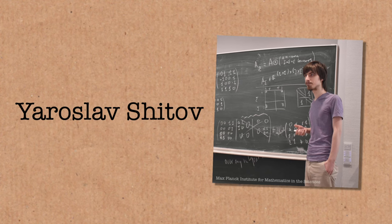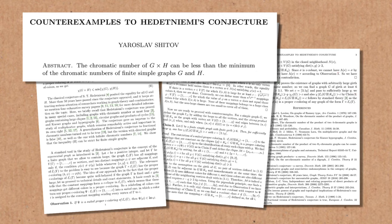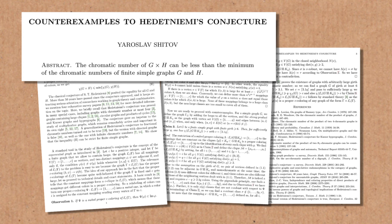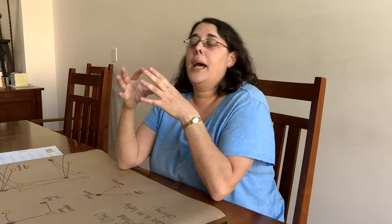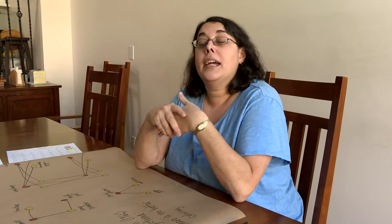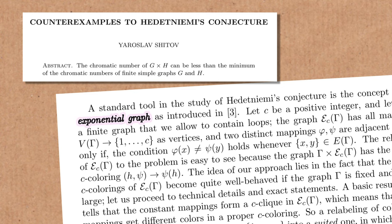But it turns out that it's really, really hard to concoct an actual example of graphs where that is true. Decades went by and no one found a counterexample until recently, when a mathematician named Yaroslav Shitov came up with one. So I'm going to tell you a bit about the nature of the graphs he came up with and then explain why I'm not going to draw them. What he did is he started with some graph G, and then for the second graph he constructed what mathematicians call an exponential graph based on the original graph.